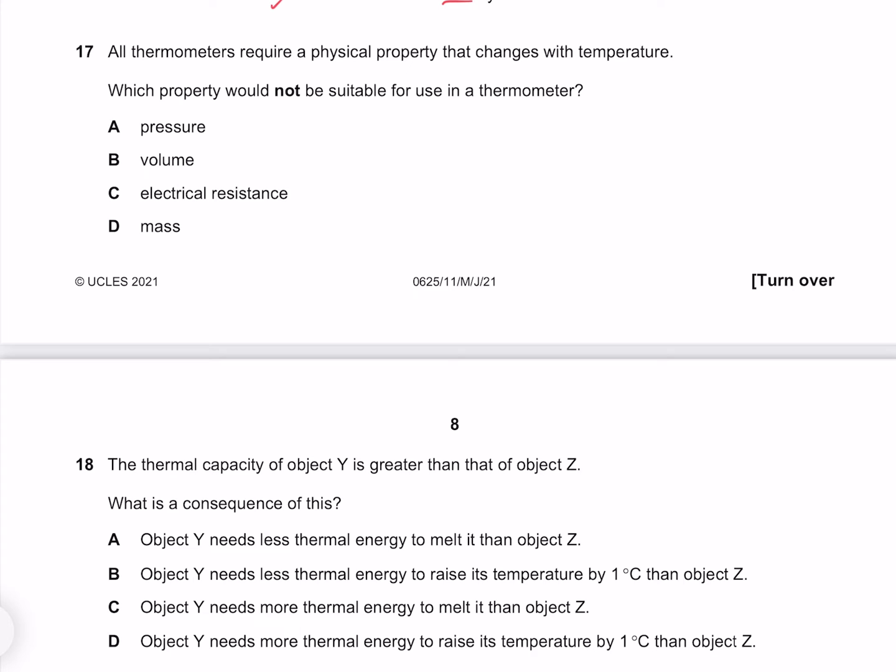All thermometers require a physical property that changes with temperature. Which property would not be suitable for use in a thermometer? Pressure changes with temperature which makes it a good choice, as does volume and electrical resistance, but not mass. So D is our correct answer.